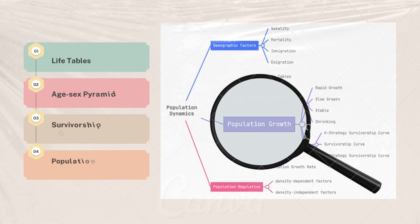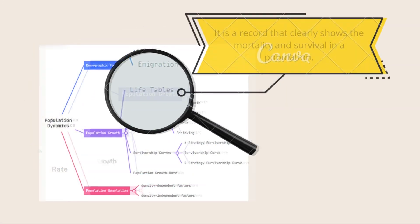The effects of these demographic factors are population growth and population decline, which cannot happen at the same time in one specific population, thus they are mutually exclusive events. Population growth is depicted through life tables, age-sex pyramids, survivorship curves, population growth rate, its formula, and patterns.